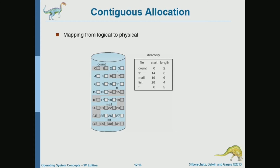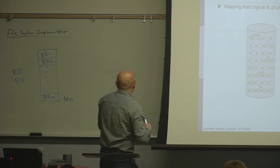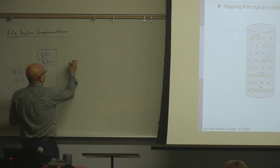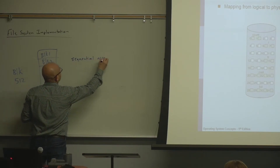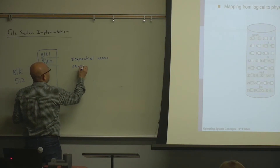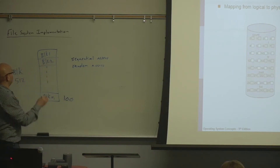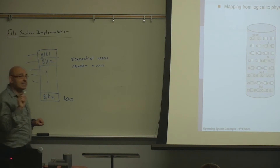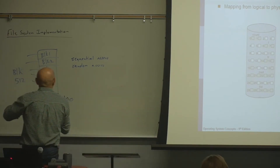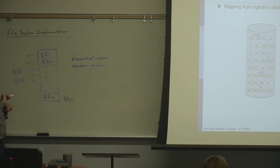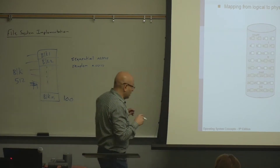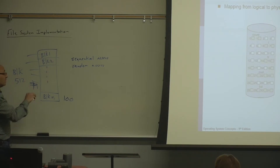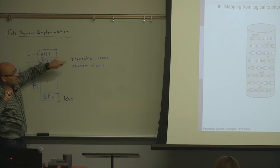In studying disk allocation schemes, we look into two kinds of disk accesses: sequential access and random access. Sequential access is accessing the entire file — all blocks in sequence. Random access is accessing a specific block, for example block number 79. A certain allocation scheme offers fast random access if it allows you to directly go to block 79 without having to go through all of them. Sequential means going through all blocks; random means accessing a specific block.